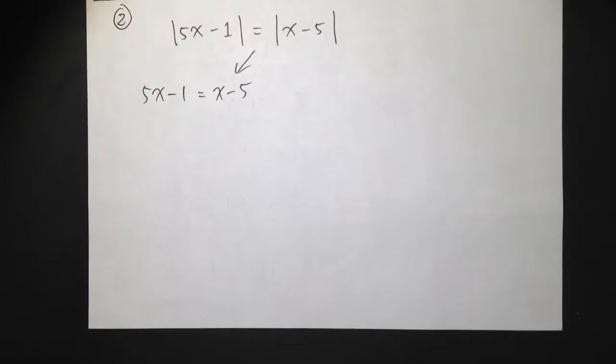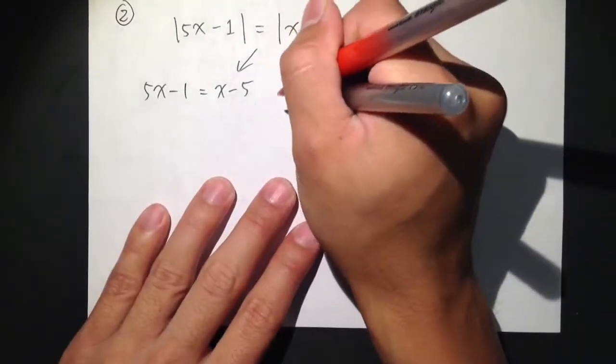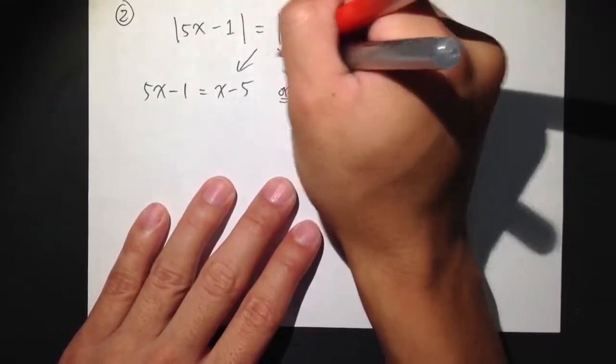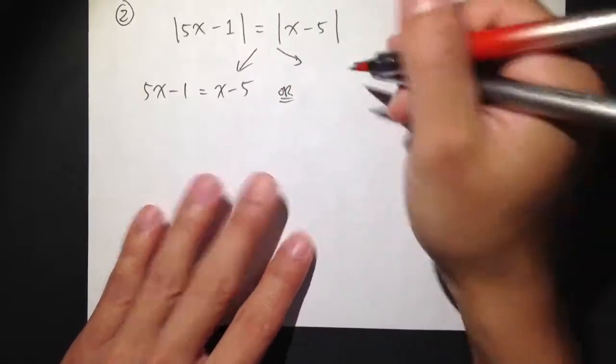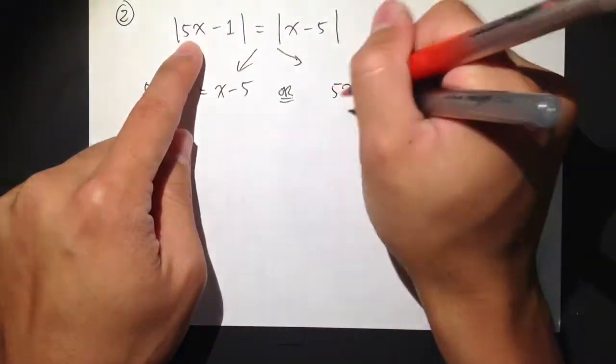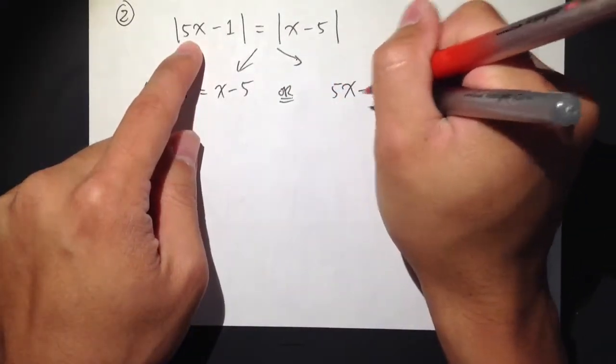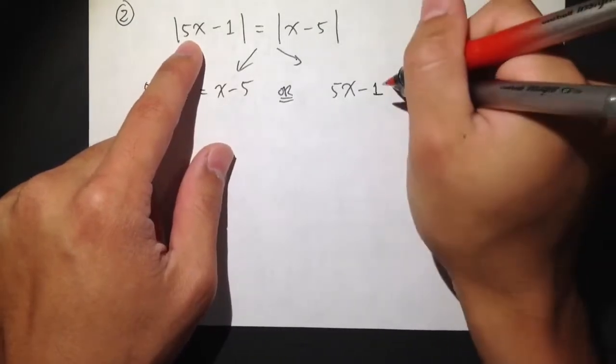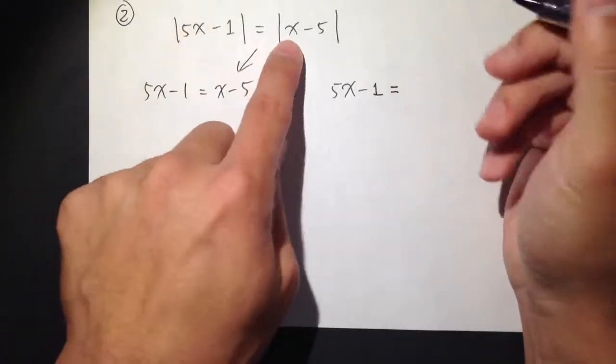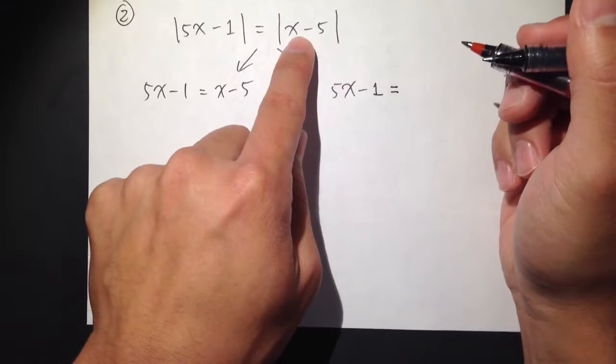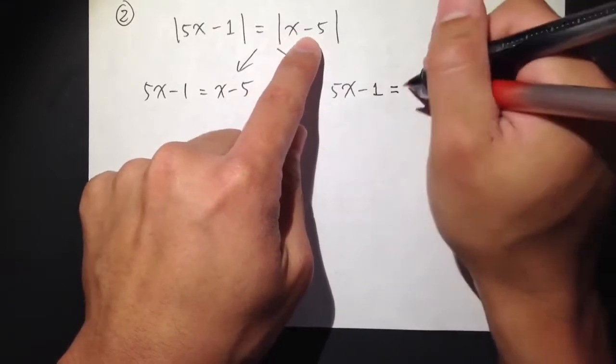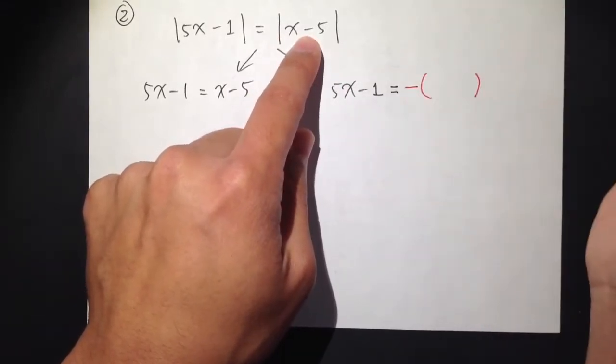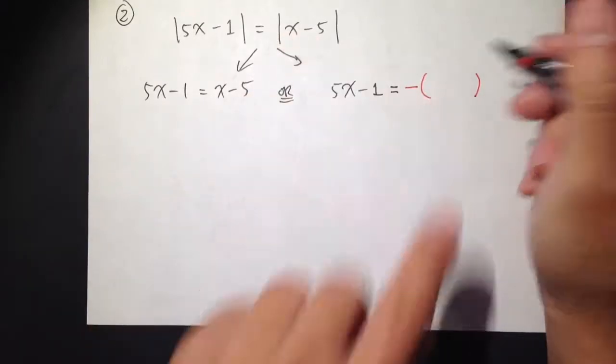We just need to take out the absolute value. Or the second part that we have to do is, you keep this at 5x minus 1, but then you want to make this equal to the second absolute value, and look at the inside, but I want to put negative parentheses first, and then put down this in here.